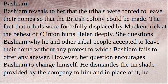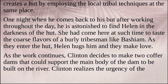Bashyam reveals to Helen that the tribals were forced to leave their homes so that the British colony could be made. The fact that tribals were forcefully displaced by McHendrick at the behest of Clinton hurts Helen deeply. She questions Bashyam why he and other tribal people accepted to leave their home without any protest, to which Bashyam fails to offer any answer. However, her question encourages Bashyam to change himself — he dismantles the tin shade provided by the company and in its place creates a hut using local tribal techniques. One night, when he comes back to his hut after working throughout the day, he is astonished to find Helen in the darkness of the hut. As they enter the hut, Helen hugs him and they make love.